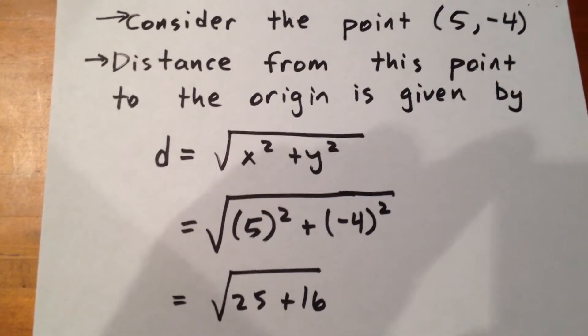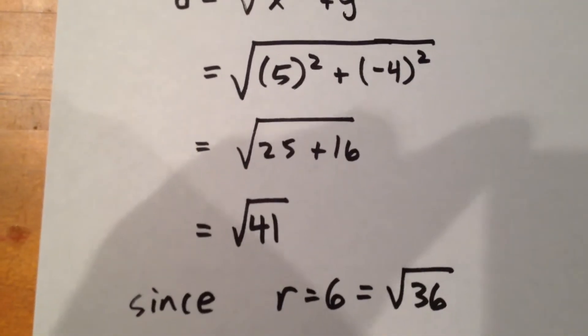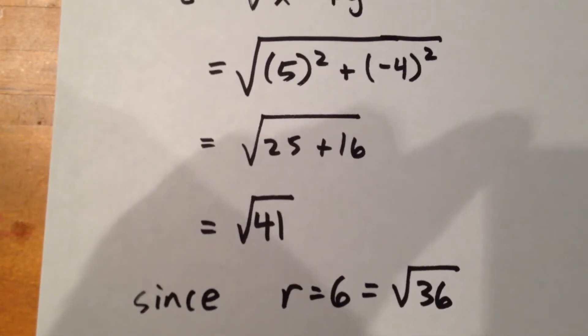Squaring 5 is 25, and squaring negative 4 is 16. So the distance from the point that we were given is root 41.